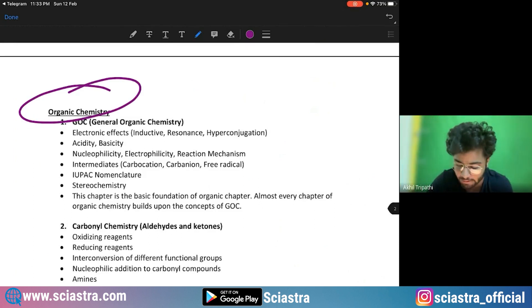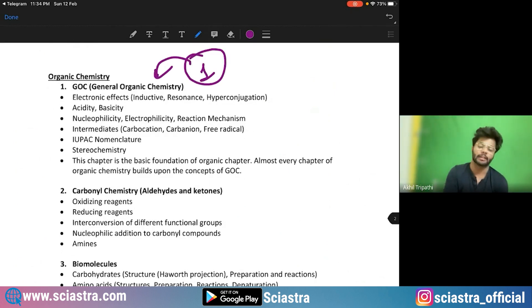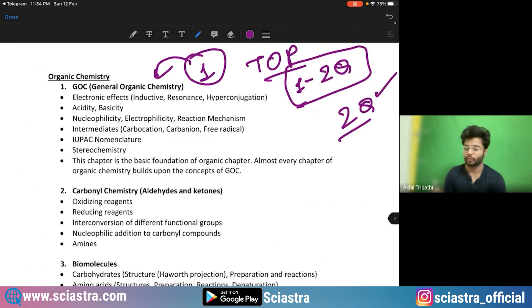Coming to organic chemistry. So many people face problems in organic chemistry. Let me tell you from where questions are going to come. First one is GOC, top priority. I'm telling you top priority. Two questions, one to two questions guaranteed. I think actually two questions will come from GOC. From where: electronic effects, stability of anions, cations, etc., based on the inductive, resonance, hyperconjugation effect, then acidity and basicity order of various molecules based on electronic effects, nucleophilicity, electrophilicity, reaction mechanism, intermediates.